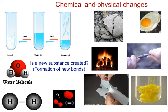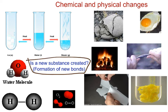If you want to know whether something is a chemical change, you ask yourself simply: is a new substance being created, or am I forming new bonds? Because if you're creating something new, bonds have to be broken and bonds have to be formed to create something new.